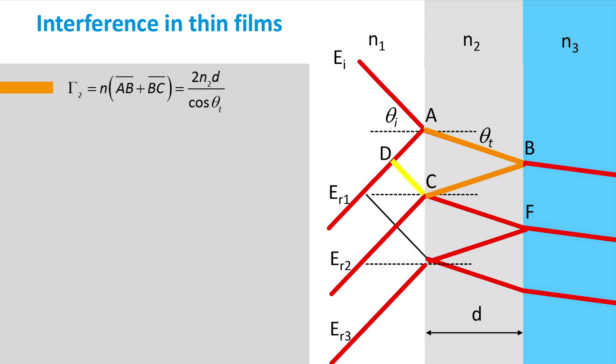The wave propagates from A to B and from B to C. Its optical path length therefore equals the sum of AB and BC multiplied by the refractive index of the medium N2. AB and BC both equal D, the thickness of the grey layer, over cosine θt, the angle of transmission, yielding the shown equation.